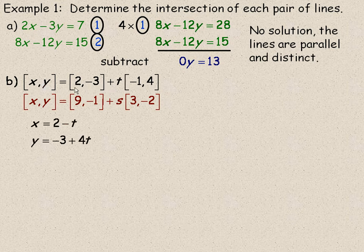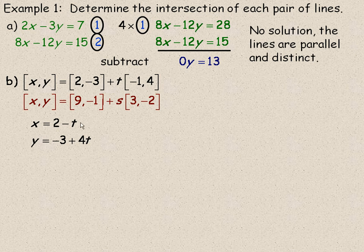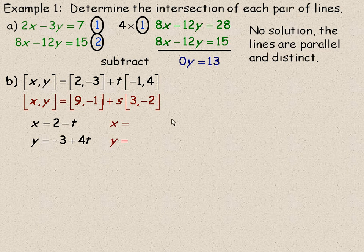And so the basic standard strategy here is to put the two equations in parametric form. And so the black one, the top one here, x would equal 2 minus t, and y would equal negative 3 plus 4t.